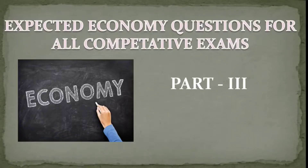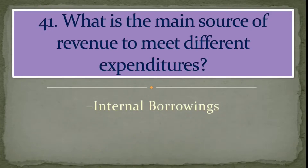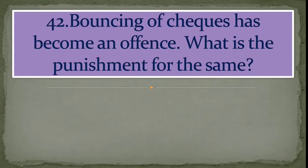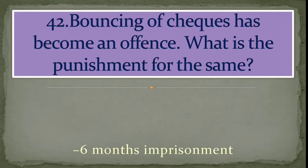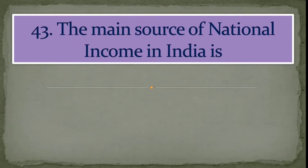Hello everyone, welcome back to my channel. This is Assam Prep, economy section, Part 3. Question number 41: What is the main source of revenue to meet different expenditures? Correct answer: internal borrowings. Question number 42: Bouncing of checks has become an offense. What is the punishment for the same? Answer: six months imprisonment.